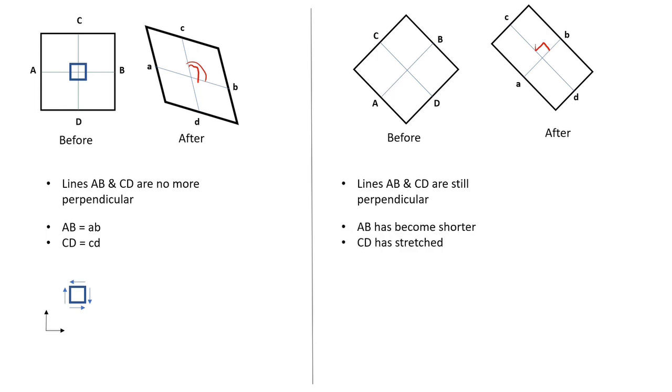AB has become shorter, which means a compressive stress is acting upon it. CD has stretched, which means a tensile stress is acting upon it. So the stress state at this small square would be comprised of tensile and compressive stresses.